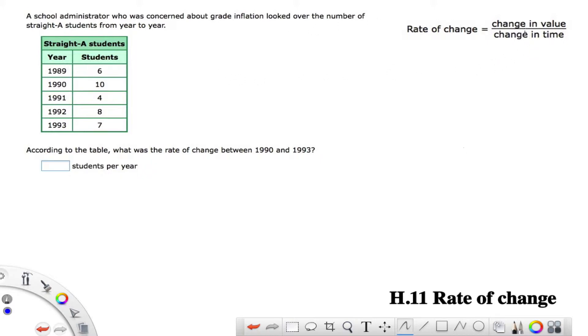So in this example, what we want to do is we want to find the change, how the value changed, and then over what period of time it changed. So we want to look here, we find a value. The school administrator is worried about grade inflation. So we look at these straight A students from the various years. So we're going to look at 1990 to 1993. So we've got these two values we're concerned about.